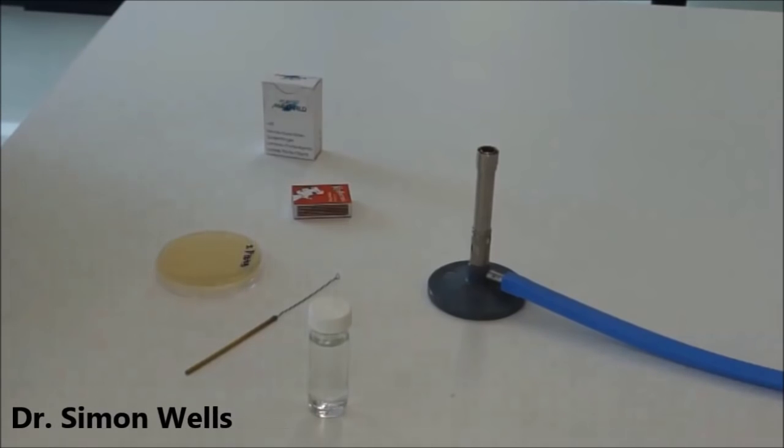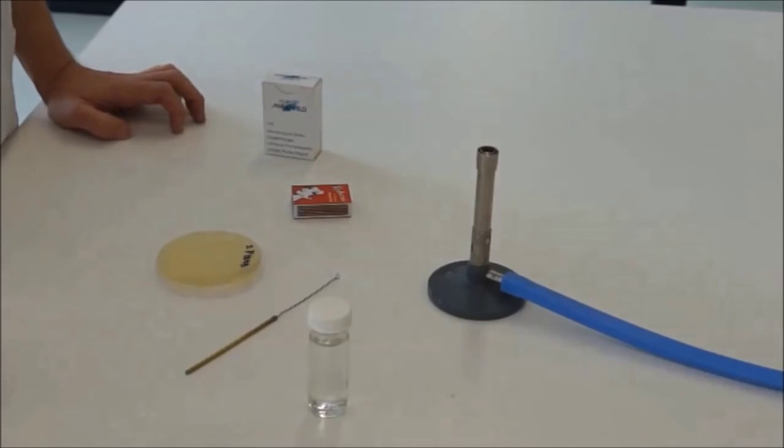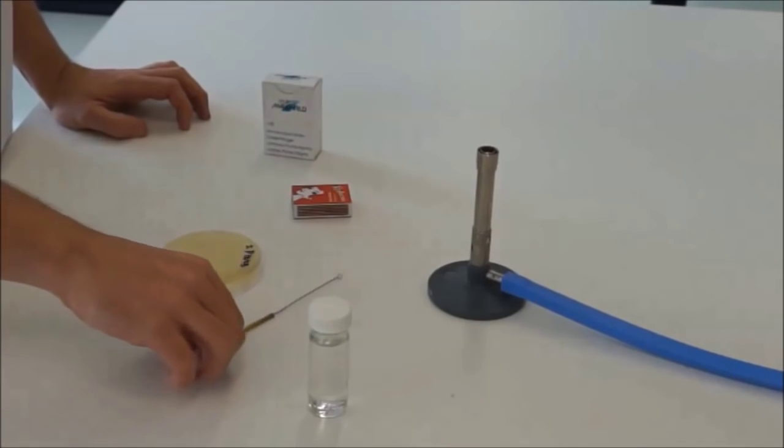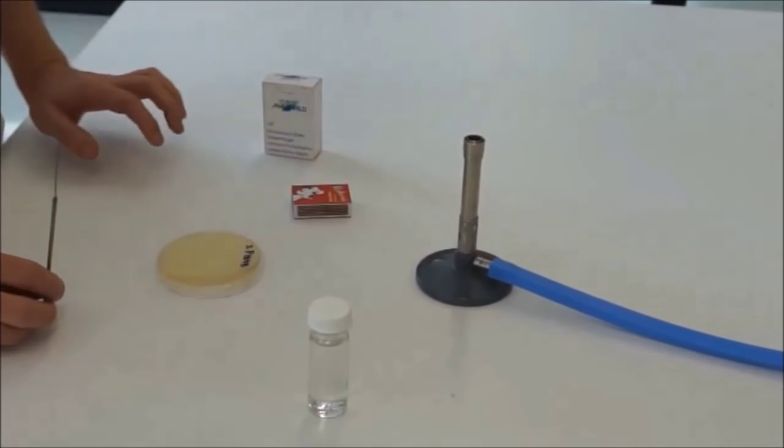Now I'm going to show you how to make a heat-fixed bacterial slide that you can then process for gram staining. It's important that you use aseptic techniques, so that means that the bacterial colonies that you're using are as pure as possible, and that means usually heat-killing any other bacteria or impure bacteria that are on your loop or anything you've transferred. So we're going to be using a Bunsen flame today.